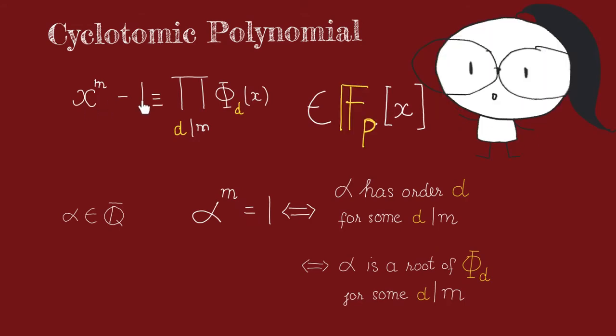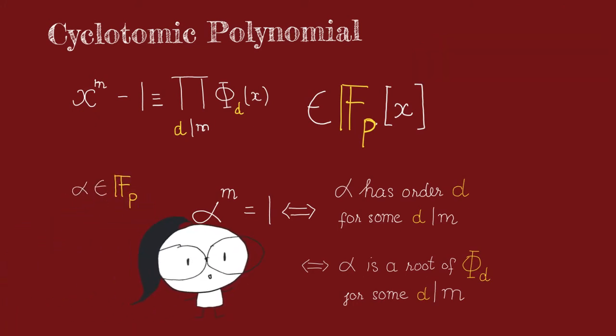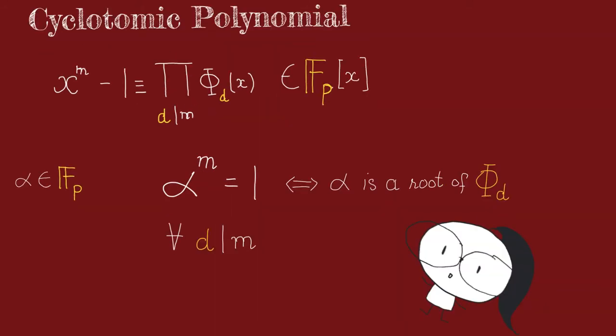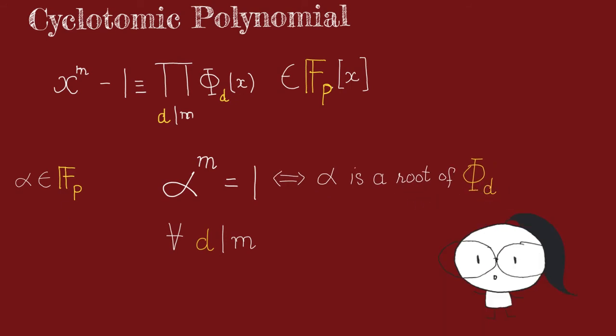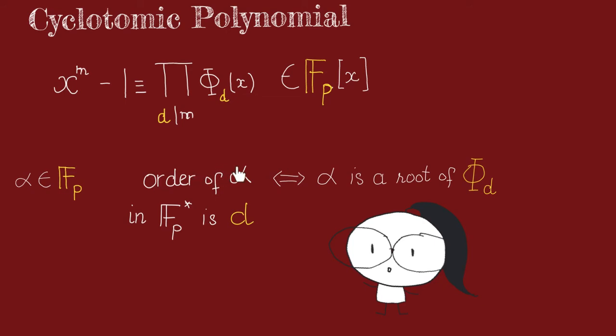Now this factorization should also hold if we reduce everything mod p. But then that would mean that for alpha in fp, this chain of reasoning should still hold. And if we read it slightly differently, we get that alpha in fp is the root of the d-cyclotomic polynomial if and only if alpha to the m is going to be equal to 1 for all m divisible by d. That is equivalent to saying that d is the smallest number such that alpha to the d is congruent to 1 in fp. Which is then just equivalent to saying that the order of alpha in fp star is equal to d.